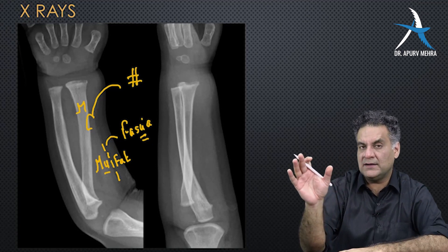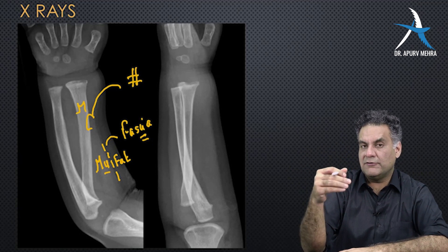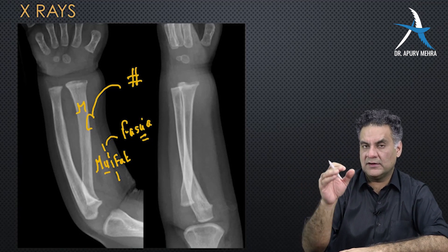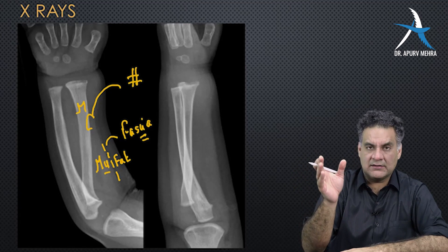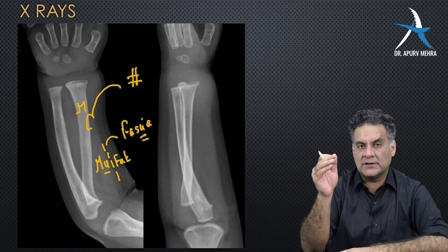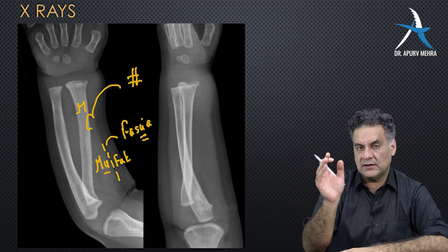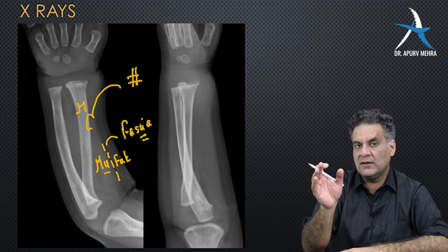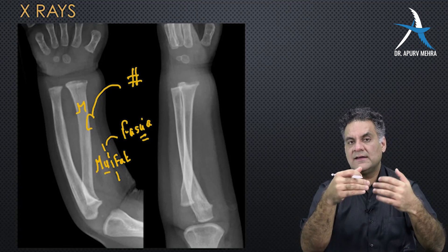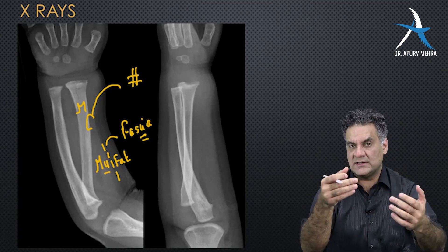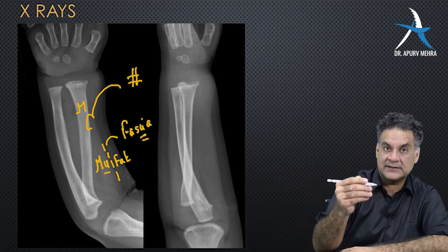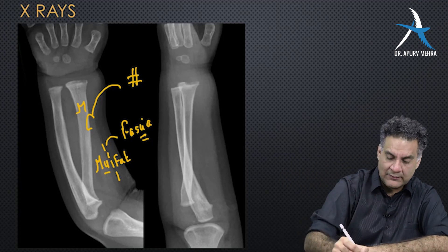Whenever there is swelling in the limb, like in infections, these soft tissue planes will merge into each other. This loss of soft tissue plane takes about 24 hours. So in the first 24 hours, X-rays are normal; after more than 24 hours, there is loss of soft tissue plane — one of the earliest X-ray features of osteomyelitis.